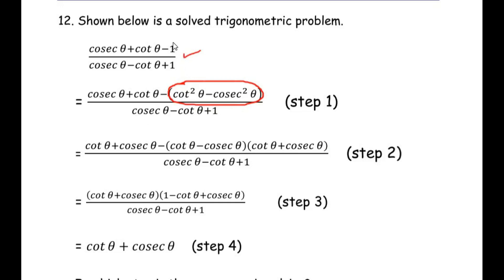So we have to check out if 1 can be substituted as cot square theta minus cosec square theta. If this substitution is correct, then the first step is correct.